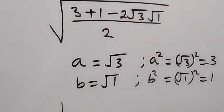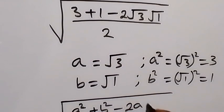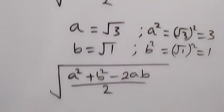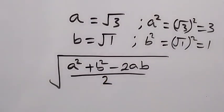We have 3 as a squared, that's a squared, then 1 as b squared, plus b squared, then minus 2 root 3 is a, and root 1 is b, then all over 2. And what we have here now can be written as square root of a minus b